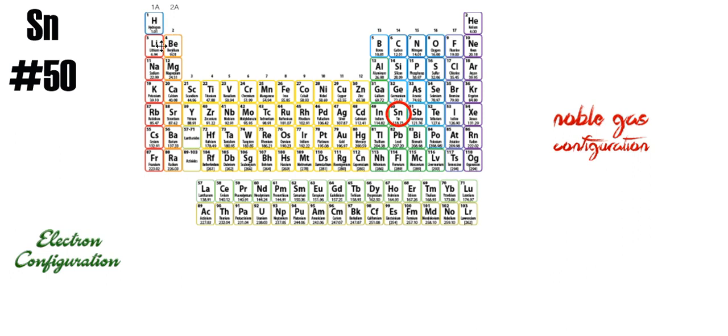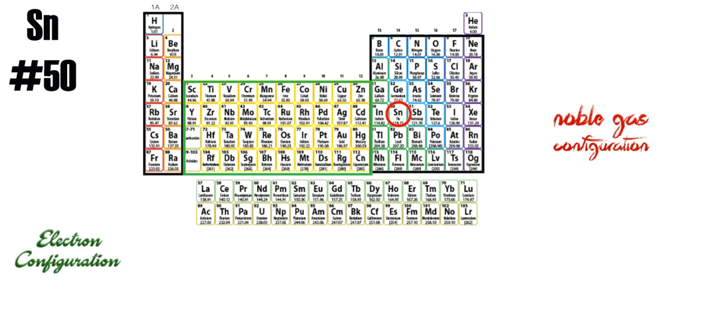So if you recall, we have different blocks. We have the s block, and we know this because it's two electrons wide and two electrons can fit in an s orbital or sub level. We have the p block, and that is six elements or six electrons wide because three orbitals can fit six electrons. We have the d block, and d orbitals sub levels have five orbitals so it can hold 10 electrons. And then finally we have the f block, and those have seven orbitals which can hold 14 electrons.